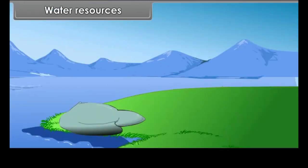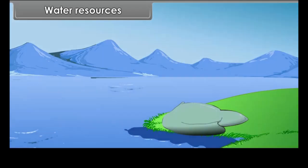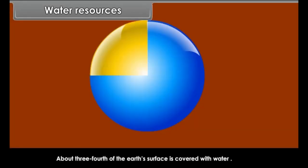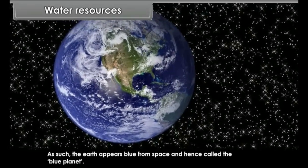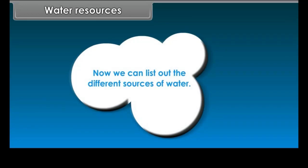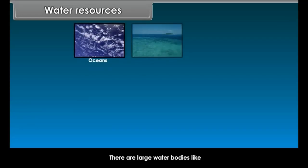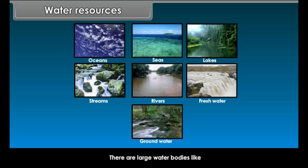Water resources. Water is essential for all forms of life. About three-fourths (71%) of the earth's surface is covered with water, which is why the earth appears blue from space and is called the blue planet. The different sources of water include large water bodies like oceans, seas, lakes, streams, rivers, freshwater bodies, and groundwater.